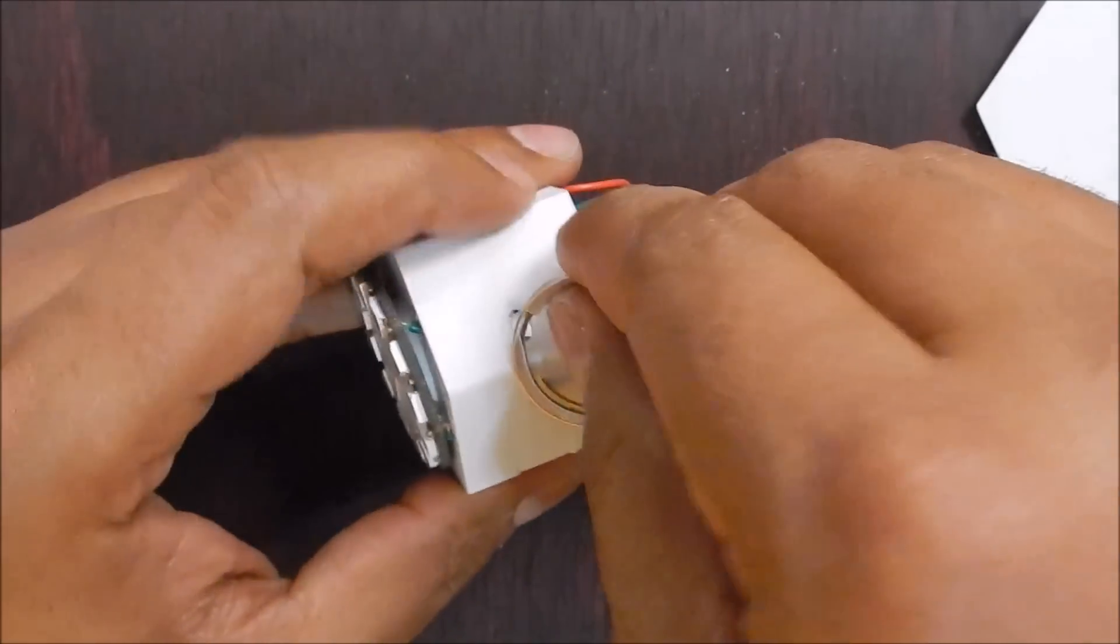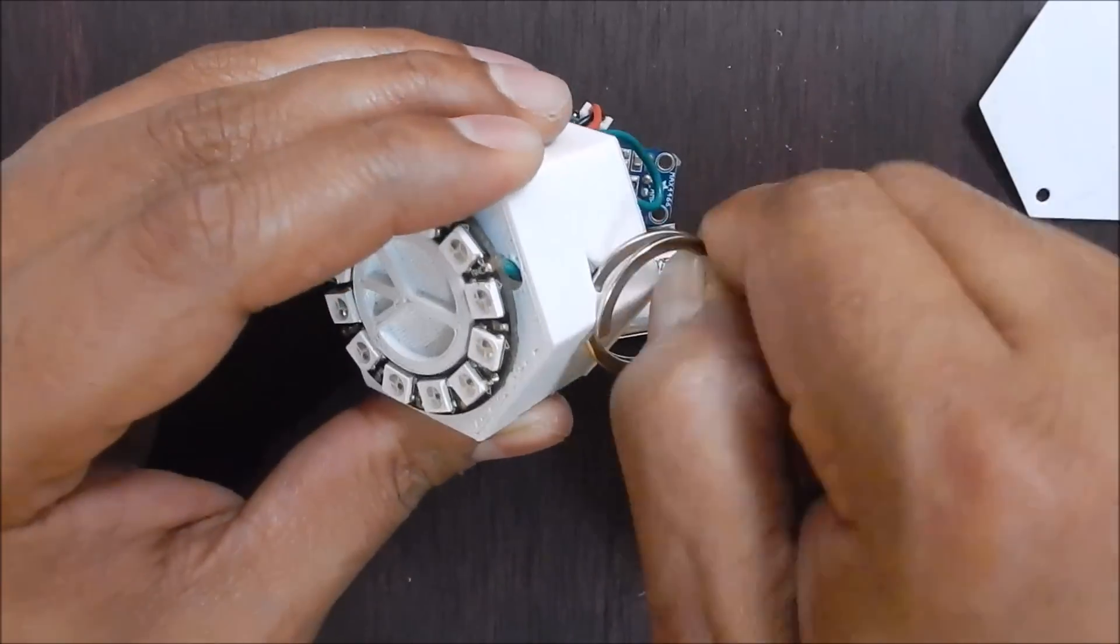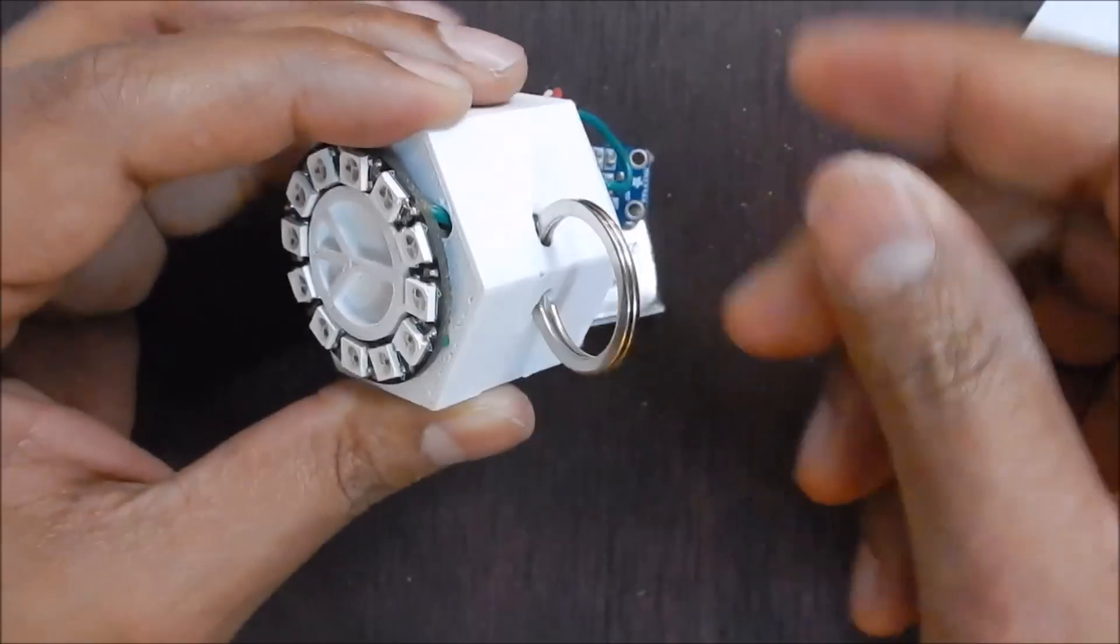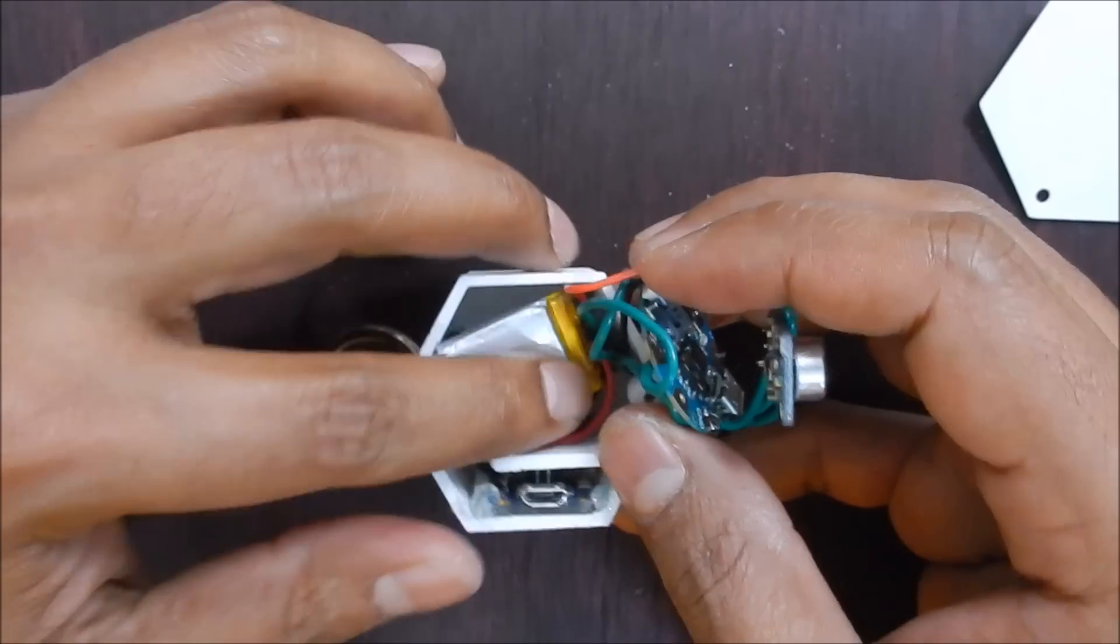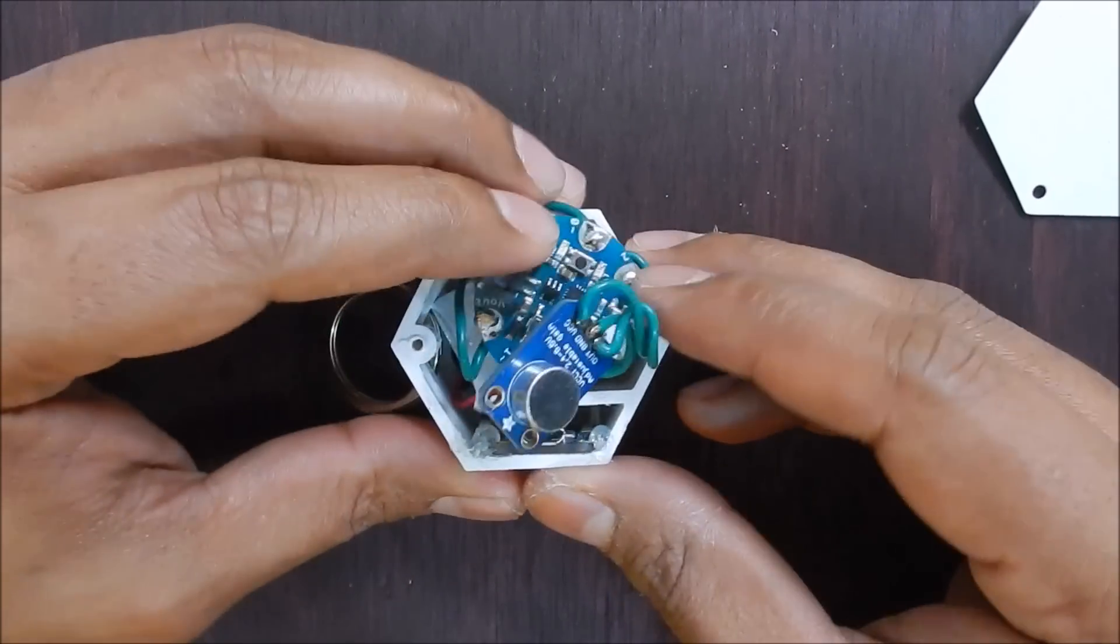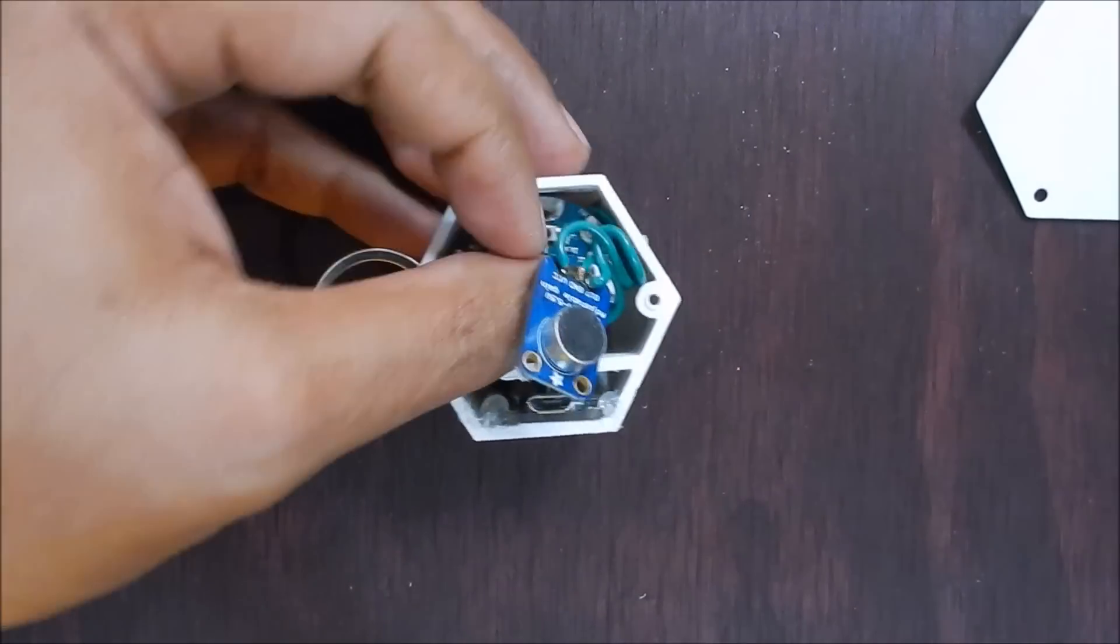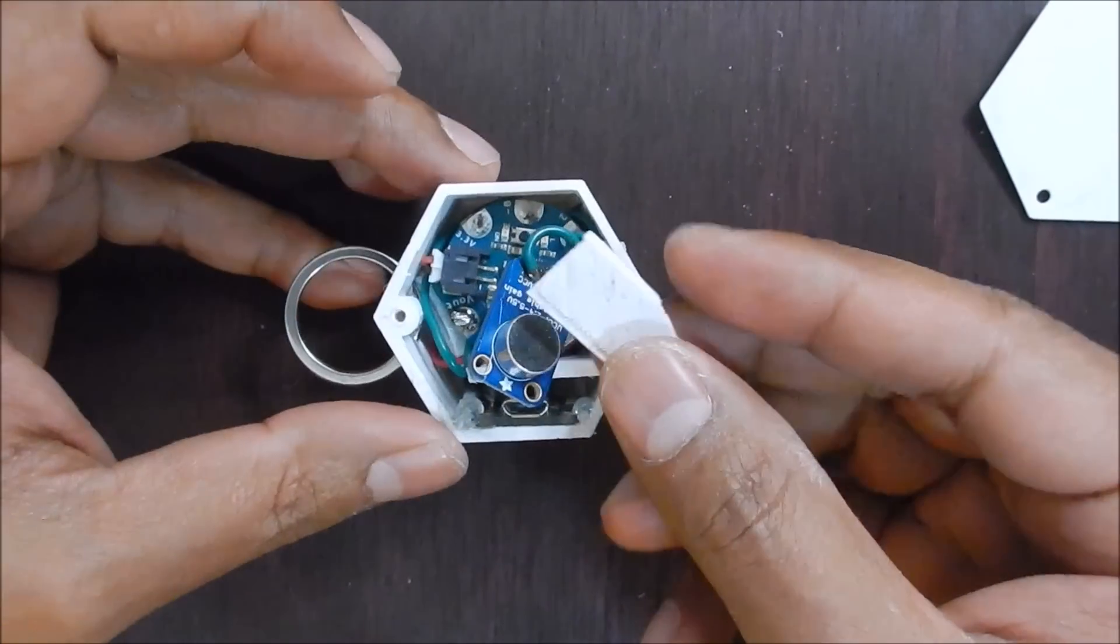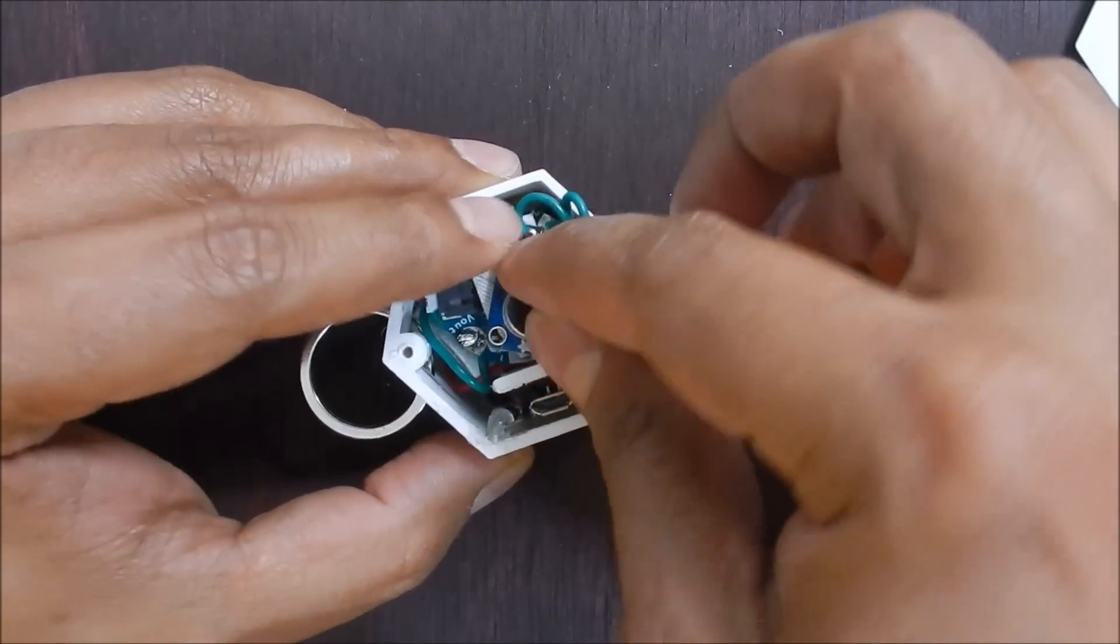Insert a keyring or any other hardware of choice to hang your pendant. Now you're ready to button up your project. First carefully insert the battery and Gemma. Insert a small piece of plastic to create a separation between the mic and Gemma and place the mic in the enclosure.